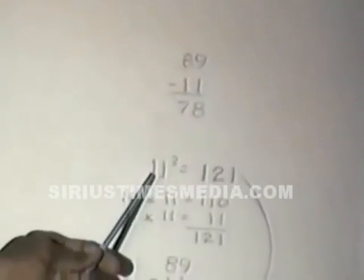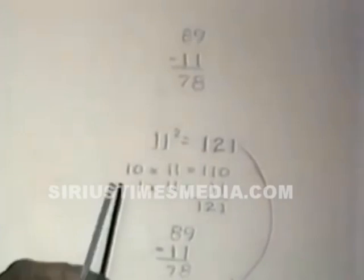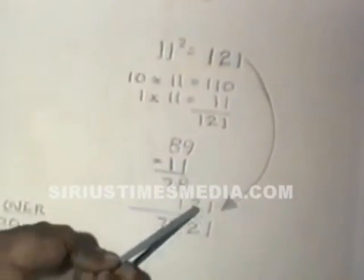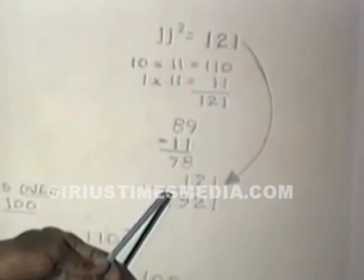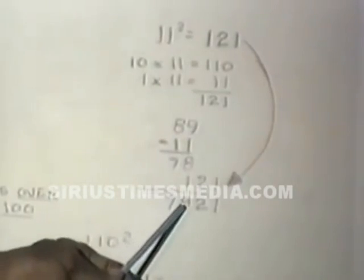Now let's do 89 squared. What is the difference between 89 and 100? It's 11. Subtract 11 from 89 to get 78. Then square the 11: 11 times 11 is 121. Add 121 to the 78 — we get 7,921. So 89 times 89 is 7,921. That's for numbers less than 100.